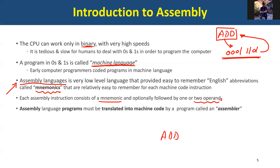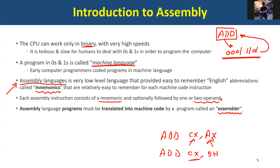For example, ADD CX, AX — this is one operand, the second operand. Add this value to this value — add the value in AX register to the value in CX register. But operands are optional, because you can directly add something like 5 to CX, which is just one operand. Since the CPU doesn't understand English, we need what's called an assembler — a program that takes this assembly code and converts it back to zeros and ones.